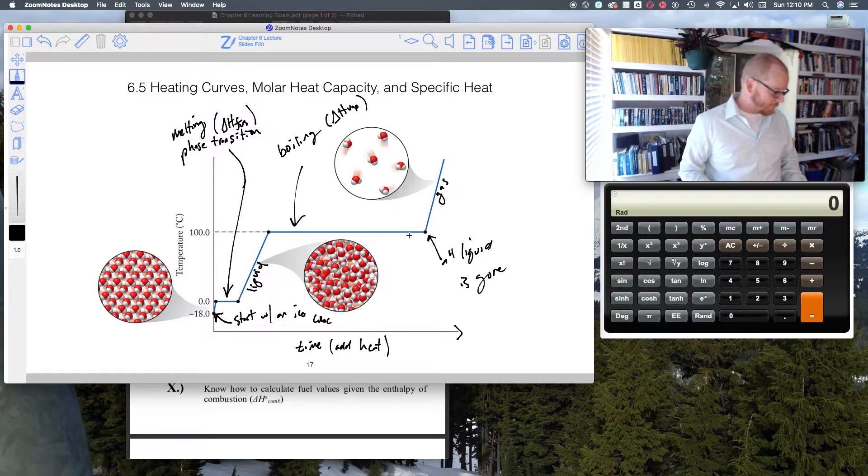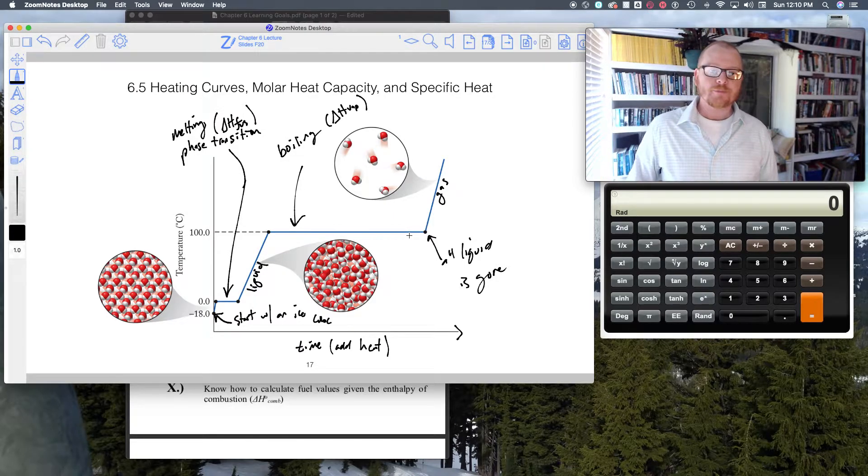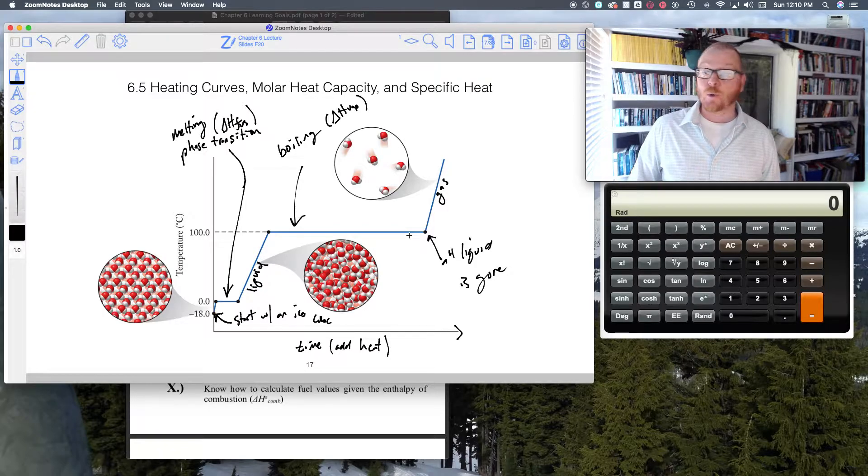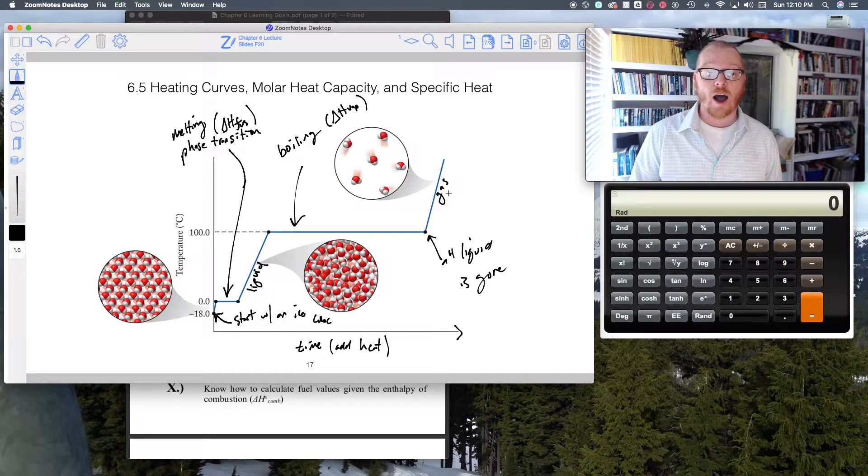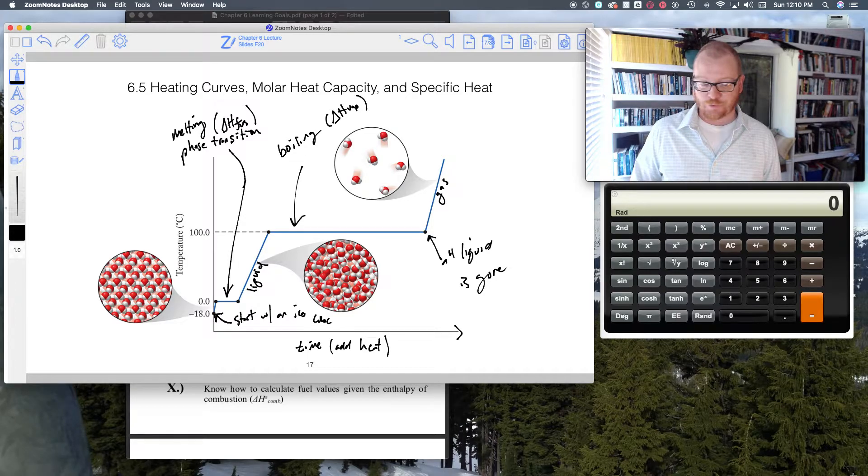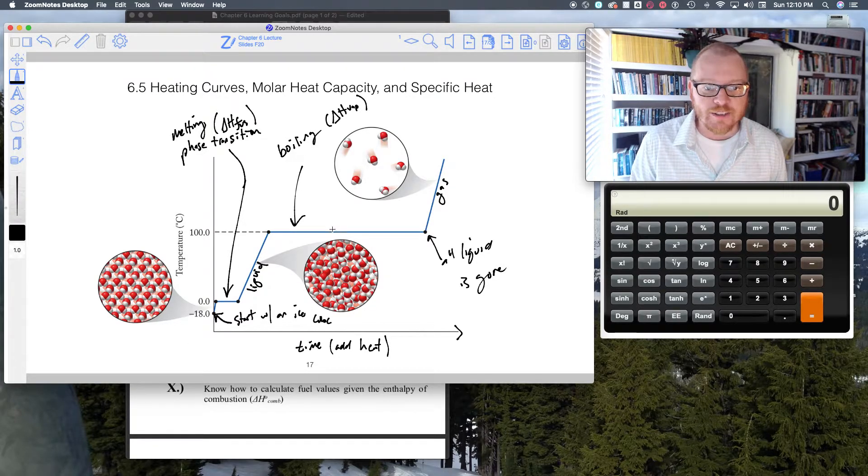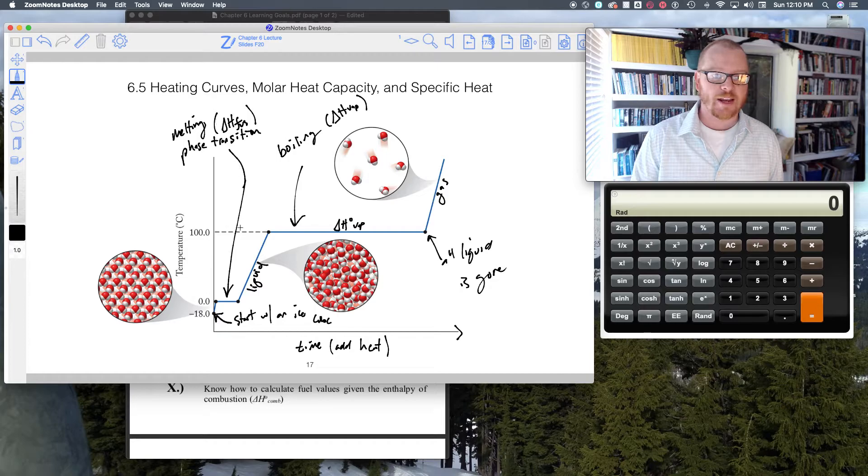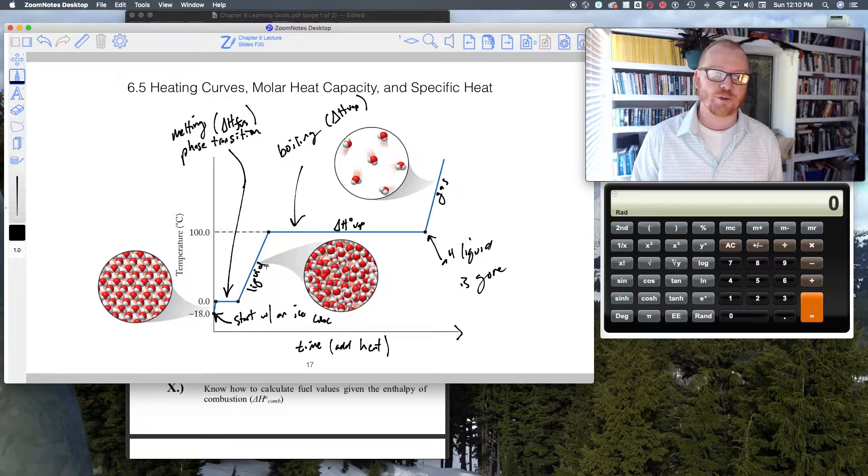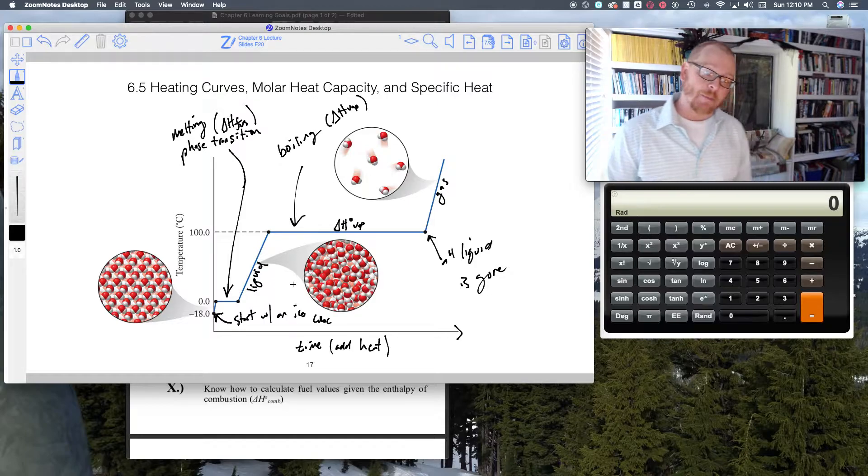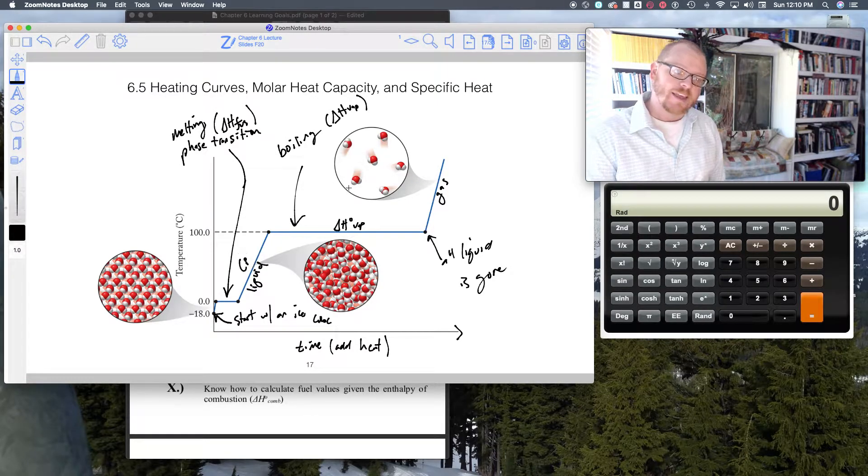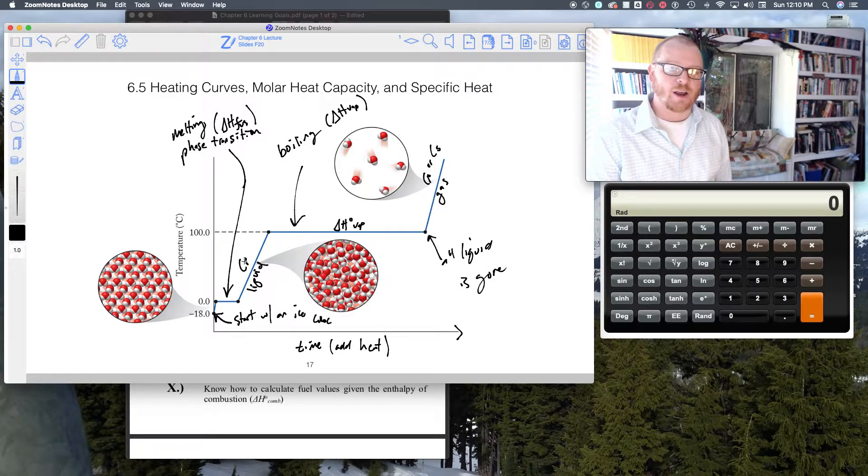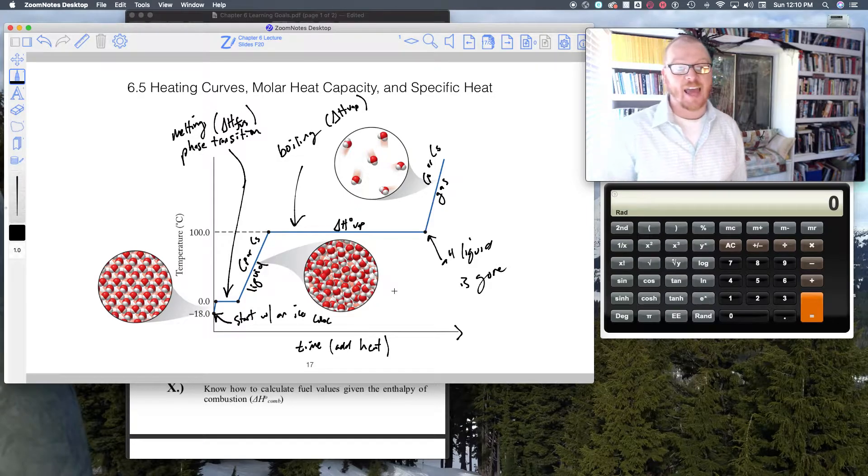Now what we're going to focus on is a set of equations that's going to allow us to predict what's going on in these various regions of the curve. I'll highlight that by saying on this line of the curve it's the delta H of vaporization, on this line it's the delta H of fusion, and on this curve what's happening is the heat capacity, Cp or Cs, depending on what units we use. I'll talk about that next.